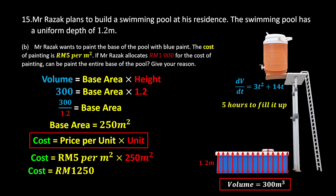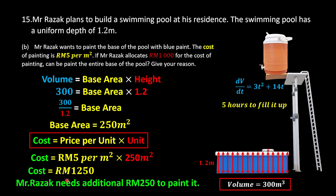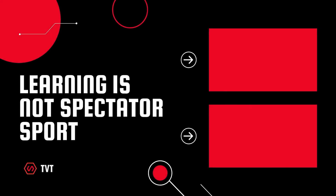Using the proportion method as an alternative: 5 ringgit per 1 m², so for 250 m², cost = 5 × 250 ÷ 1 = 1,250 ringgit — same answer. Therefore Mr. Razak does not have enough money to paint the pool; he would need an additional 250 ringgit.